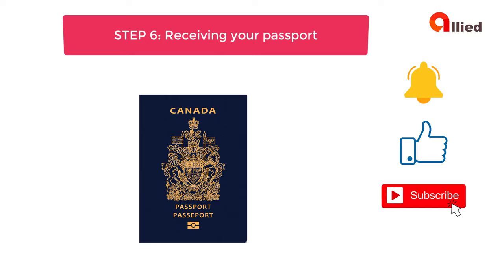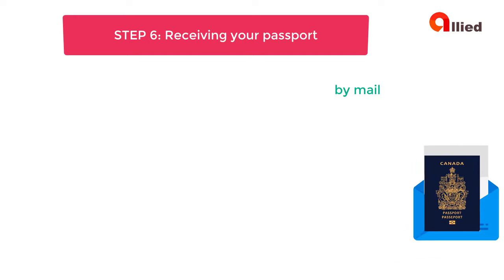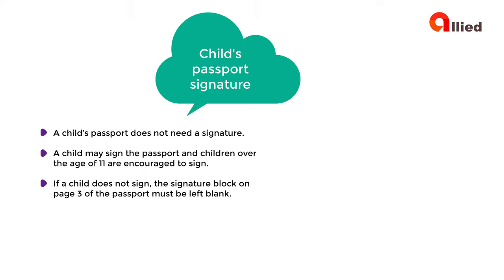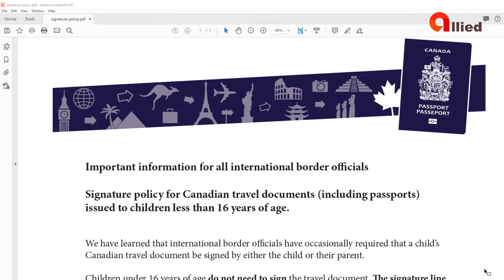Step 6: Receiving your child's passport. If you applied by mail, the passport and any original documentation you submitted, such as your child's citizenship certificate, will be returned to you by mail and may arrive in two separate packages. If you applied in person and paid for a pickup service, the pickup date will be indicated on your receipt. You can send someone else to pick up your child's passport if they have valid identification and written authorization from you to do so. A child's passport does not need a signature. A child may sign the passport and children over the age of 11 are encouraged to sign. If a child does not sign, the signature block on page 3 of the passport must be left blank. Never sign your child's passport — a parent's or legal guardian's signature makes the passport invalid. Print the signature policy and bring it with you when you travel in case you are asked to sign it. The link is in the description below.